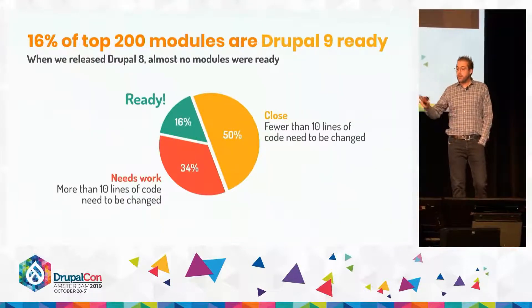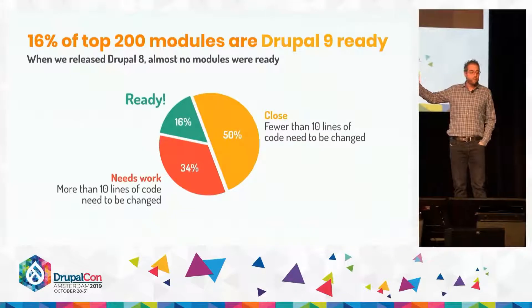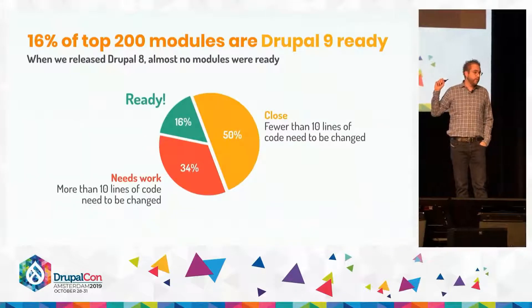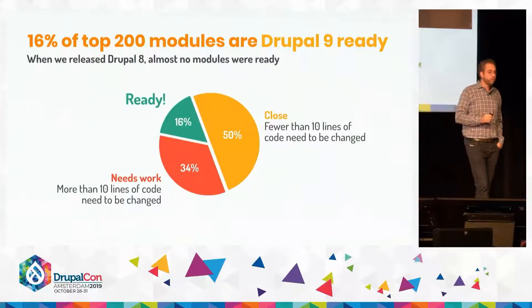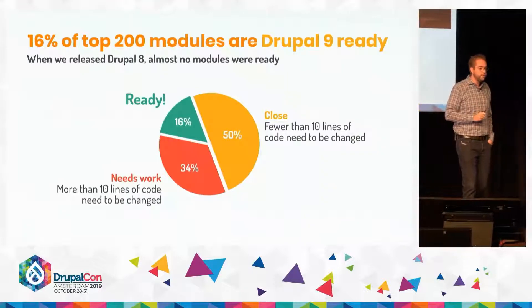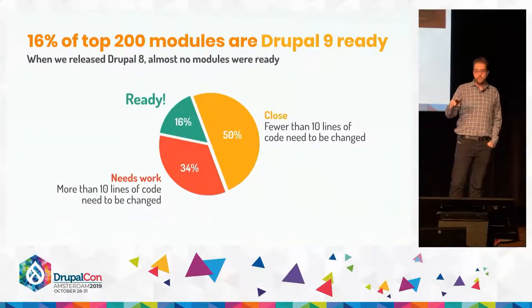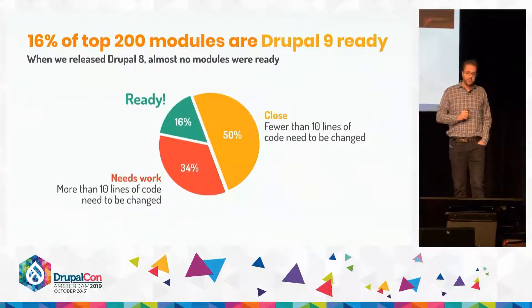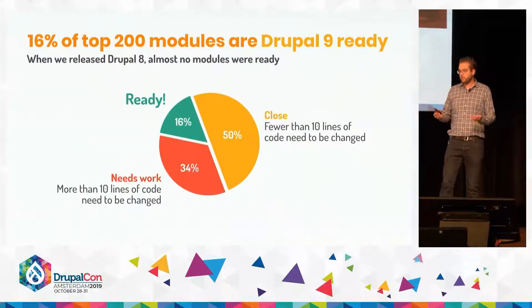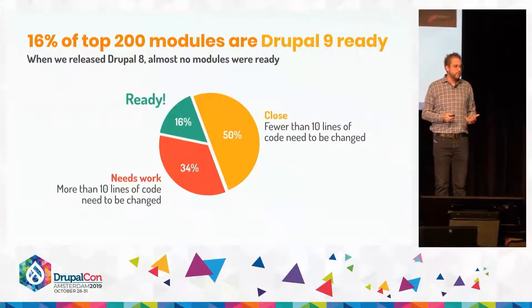Furthermore, half of the modules are very close to ready. The way we measure that is they need fewer than 10 lines of code changed for them to be ready. And 34% of the modules need more than 10 lines of code to be changed.